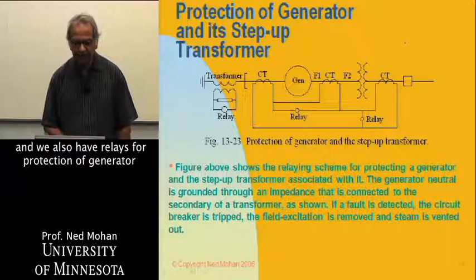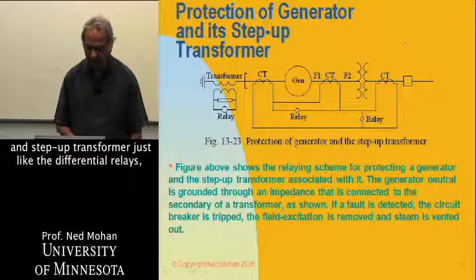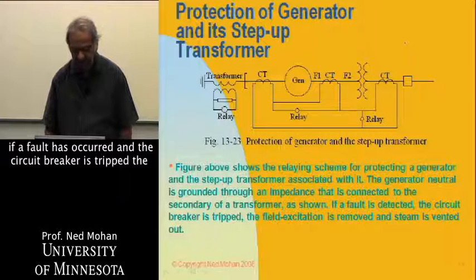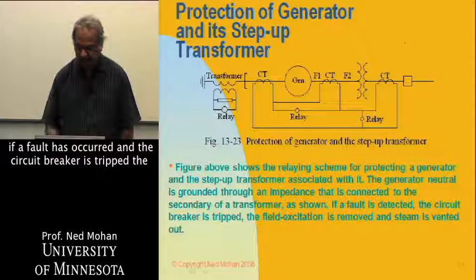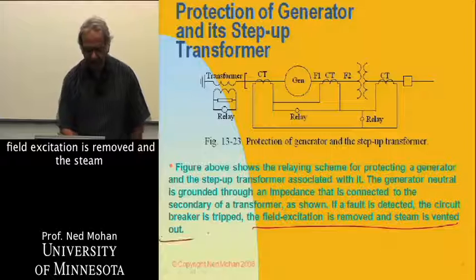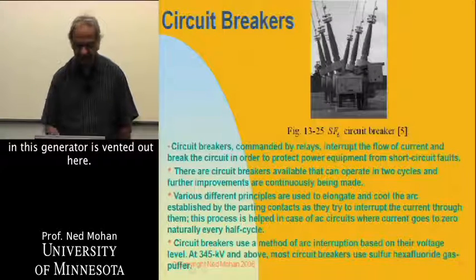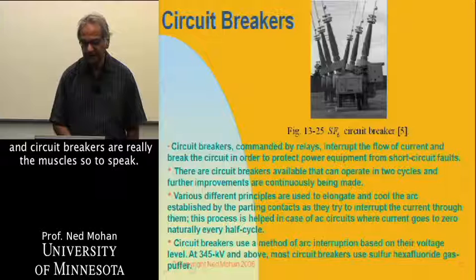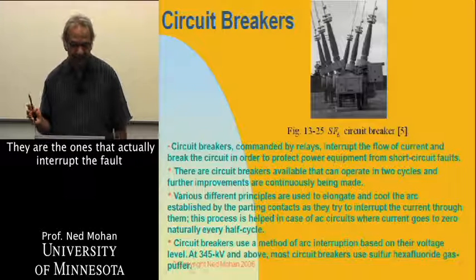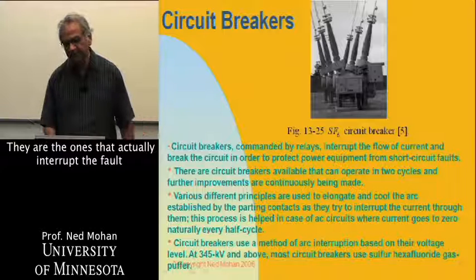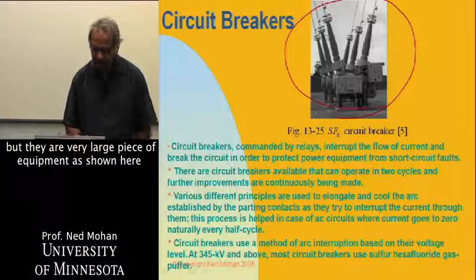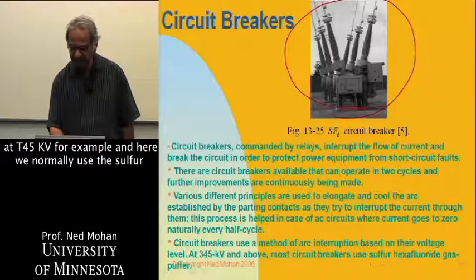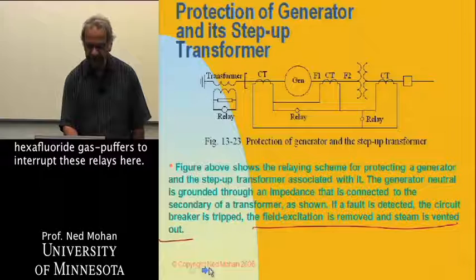We also have relays for protection of generators and step-up transformers, just like differential relays. These can determine if a fault has occurred, the circuit breaker is tripped, the field excitation is removed, and the steam in the generator is vented out. Then we have circuit breakers — the relays are the intelligence, and circuit breakers are the muscles. They are the ones that actually interrupt the fault. They are very large pieces of equipment, as shown here at 345 kV, and normally use sulfur hexafluoride gas puffers to interrupt the current.